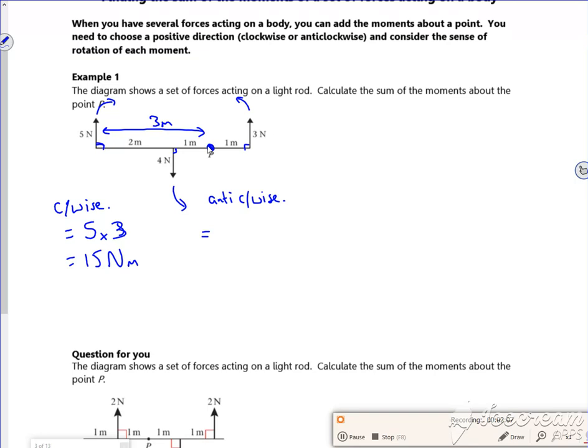So if I look at the three newton one, it's only one meter away from the spinning point. And then also if I look at the four newton one, that's the same, it's also one meter away. So that gives us seven newton meters.